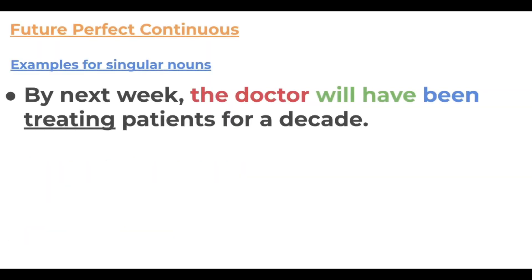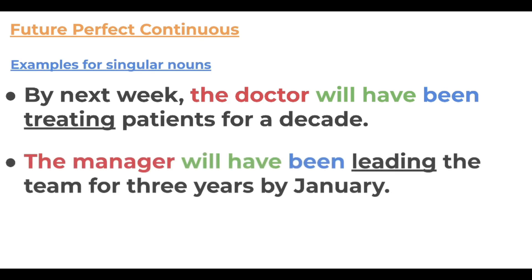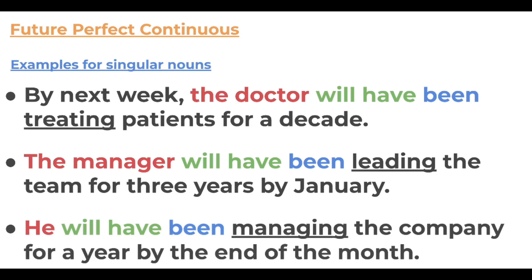With singular nouns: 'By next week, the doctor will have been treating patients for a decade.' 'The manager will have been leading the team for three years by January.' 'He will have been managing the company for a year by the end of the month.' This is a great tense for talking about achievements, big milestones, anniversaries, and important calendar dates.